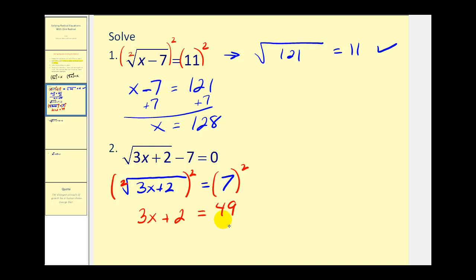So the square root of three x plus two squared will be three x plus two equals seven squared, that's 49. Subtract two on both sides, that would give us three x equals 47. Dividing by three, we have x equals 47 thirds.